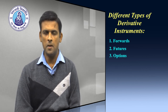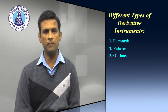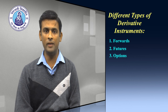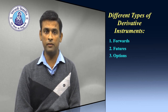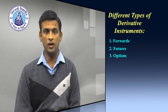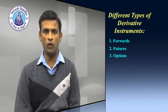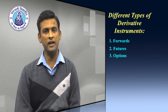The third one is options. Basically there are two types of options: number one is the call, number two is the put. Calls are instruments which give the right to buy any asset but not the obligation to buy a given quantity of the underlying asset at a given price on or before a given future date. Puts give the buyer the right but not the obligation to sell a given quantity of the underlying asset at a given price on or before a given date.